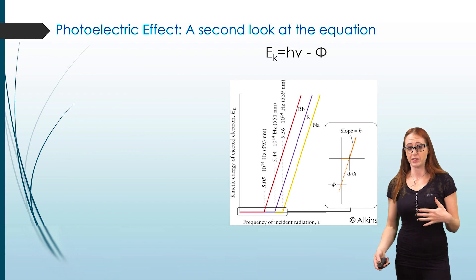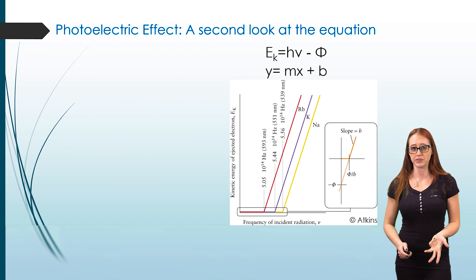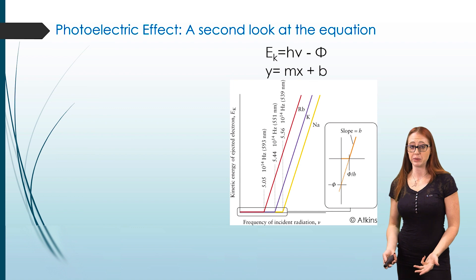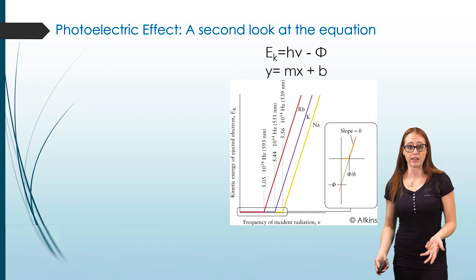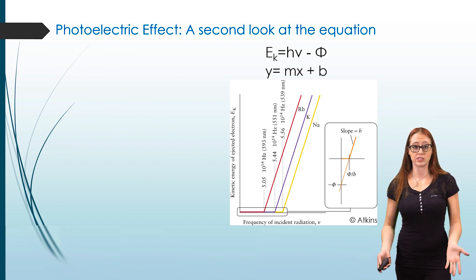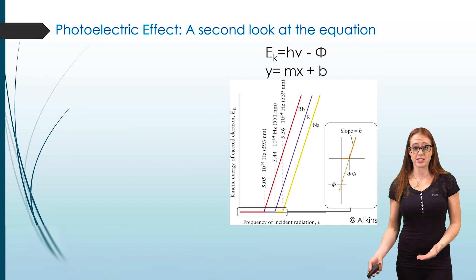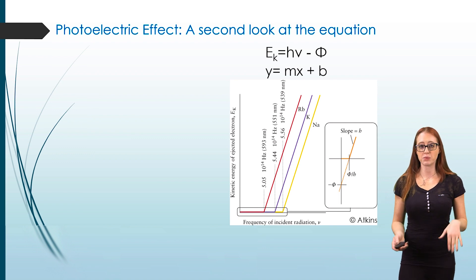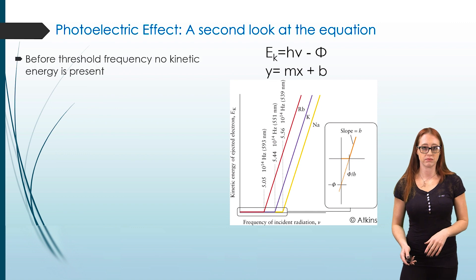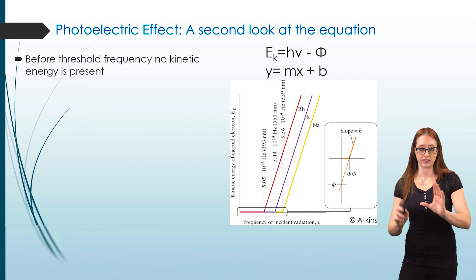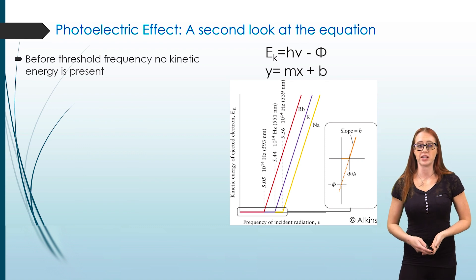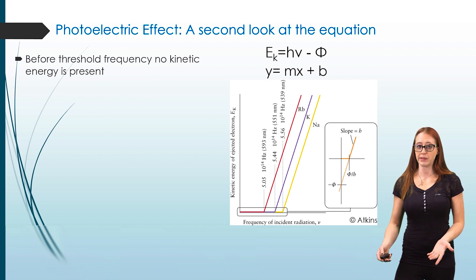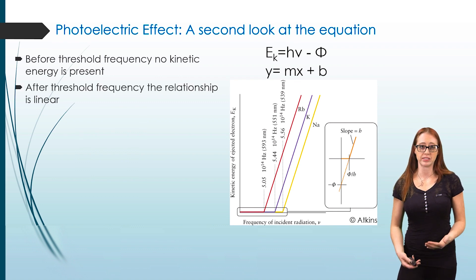If we put kinetic energy on the y-axis and frequency of light on the x-axis, we get a linear graph — y = mx + b — where the slope m equals h (Planck's constant) and the intercept b equals the work function. We can't have a negative kinetic energy, so the line goes to zero before the threshold frequency. Before the threshold frequency, no kinetic energy is present — that's why we have the line at zero. After the threshold frequency, the relationship is linear.